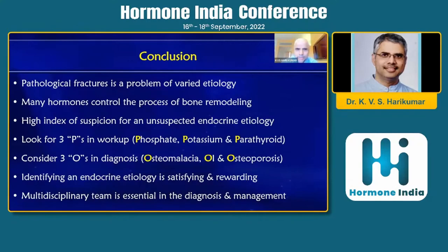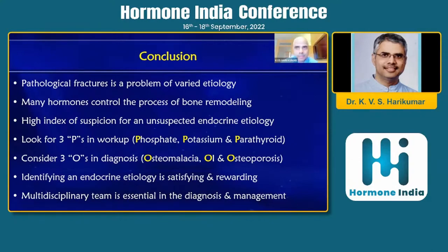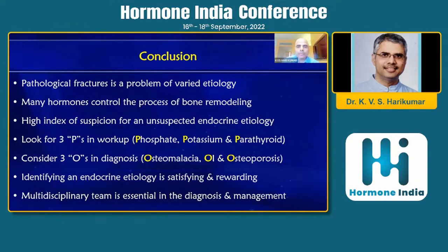To conclude: pathological fractures have varied etiology and many hormones control the process of bone remodeling. A high index of suspicion is required for unsuspected endocrine etiology. The focus will always remain on the fractures but we should look at what led to this. Look for the three P's — phosphate, potassium, and parathyroid — which give clues about hypophosphatemia, RTA, and hyperparathyroidism. Always look at three O's in the diagnosis: osteomalacia, osteogenesis imperfecta, and osteoporosis. Most importantly, if you identify an endocrine etiology it is always satisfying and rewarding because the patient can get cured. A multidisciplinary team including the lab and the referring orthopedician is important in managing these patients.